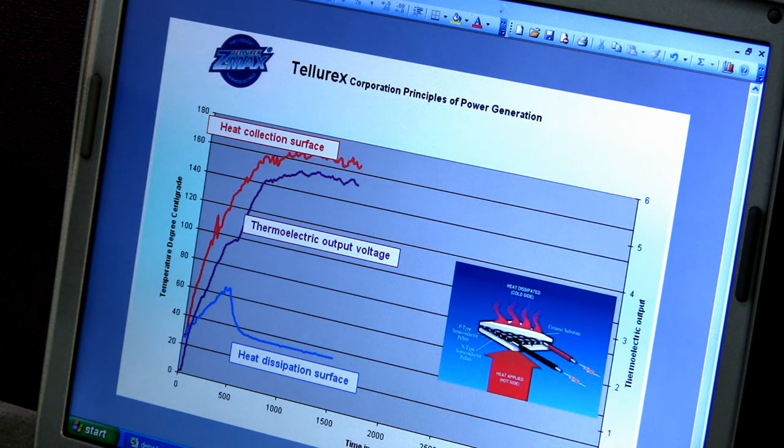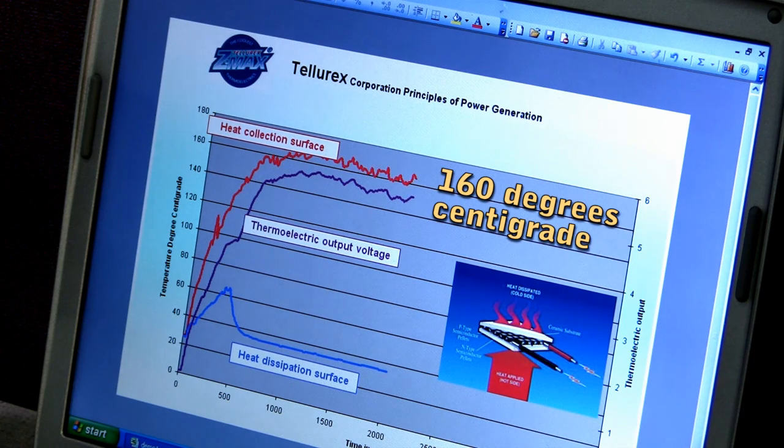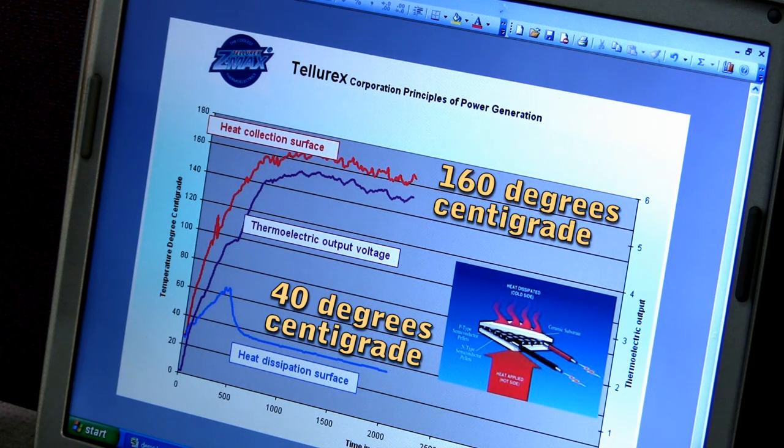The temperature of the hot side is 160 degrees C, while the dissipation side is at 40 degrees C.